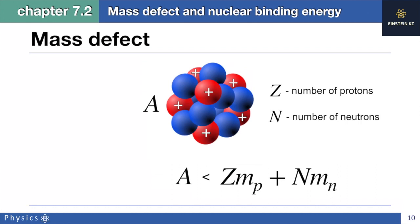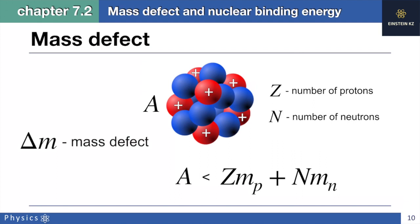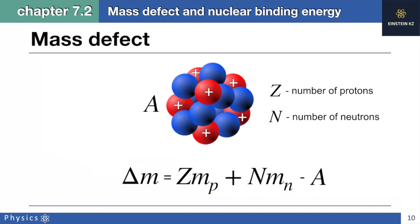Here on the right side of the inequality, Z times Mp is the total mass of all protons and N times Mn is the total mass of all neutrons. The difference between the right side and the left side of this inequality is called the mass defect and is shown by delta M. Mathematically, the mass defect is formulated as: delta M equals Z times Mp plus N times Mn minus A.